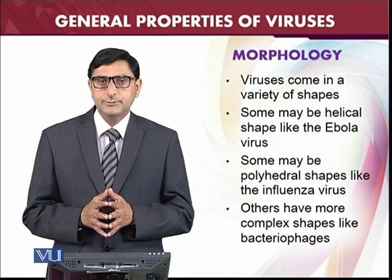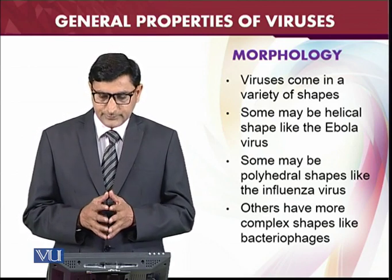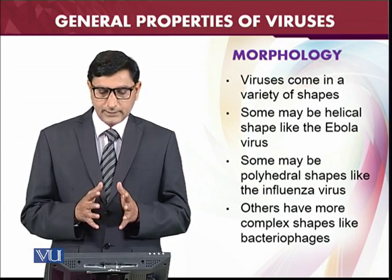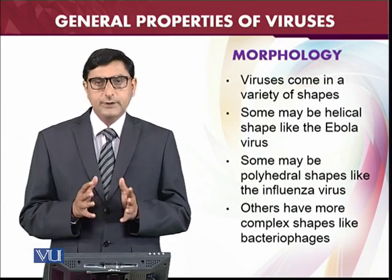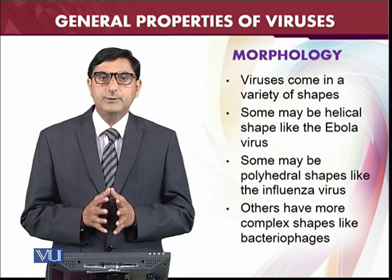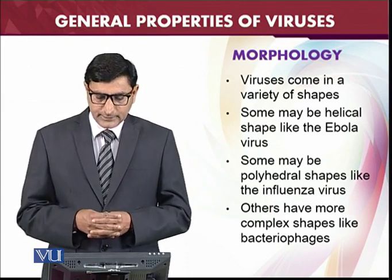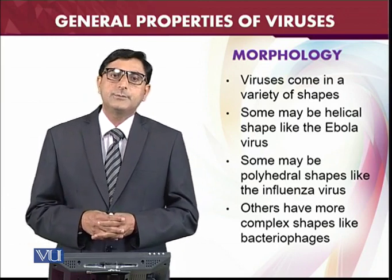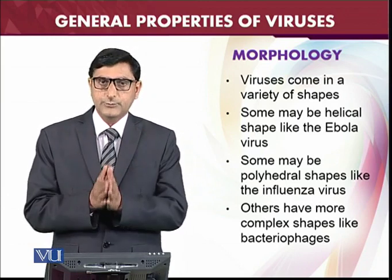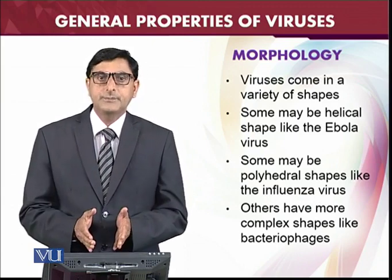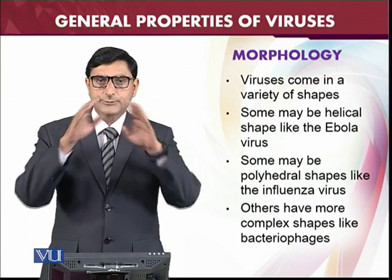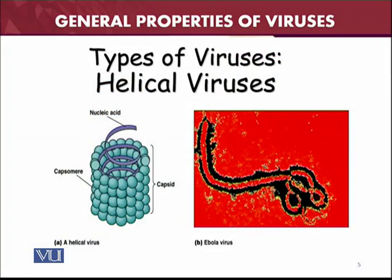Some viruses are icosahedral in shape, such as the Ebola virus which is helical. Some are polyhedral, like the influenza virus, and others have complex shapes, like bacteriophages. Bacteriophages contain a structure that is helical in shape with icosahedral symmetry. We can look at pictures and diagrams of these viruses to understand their forms.